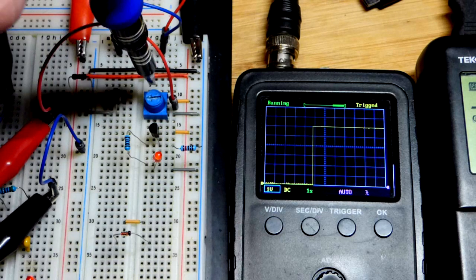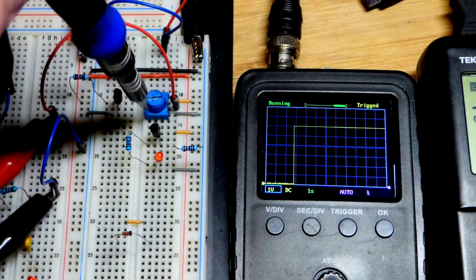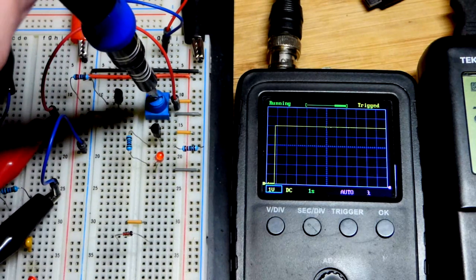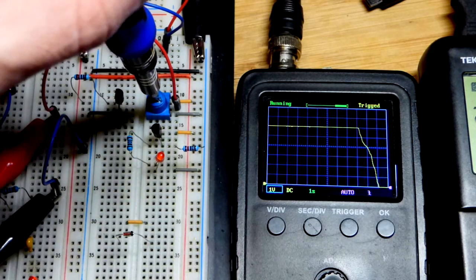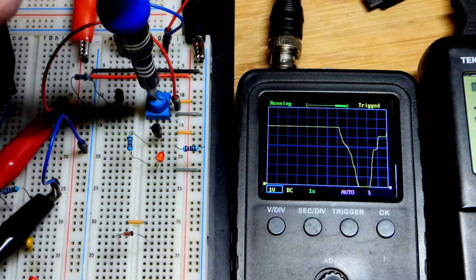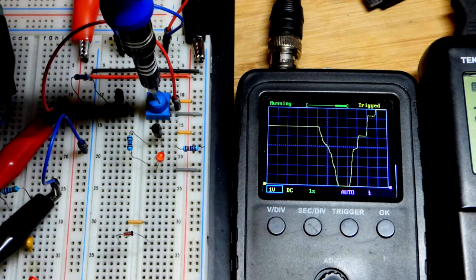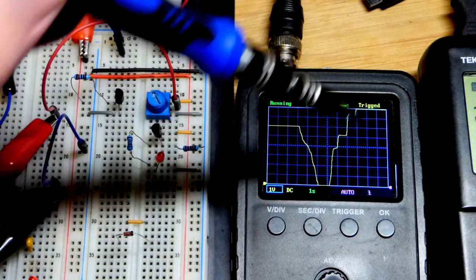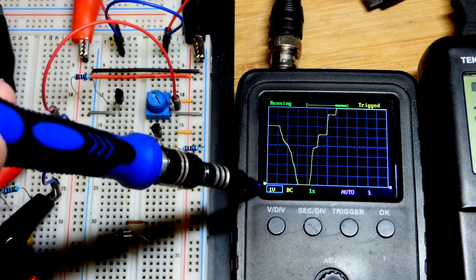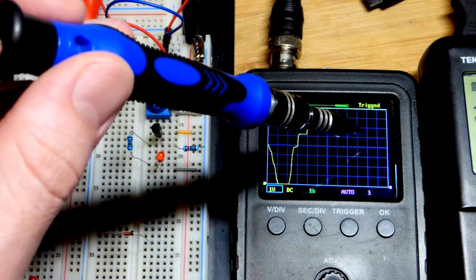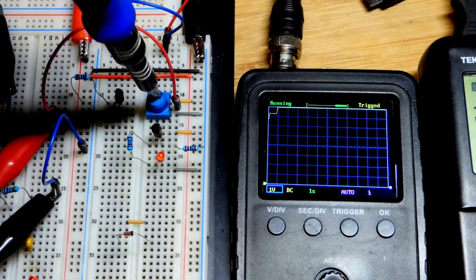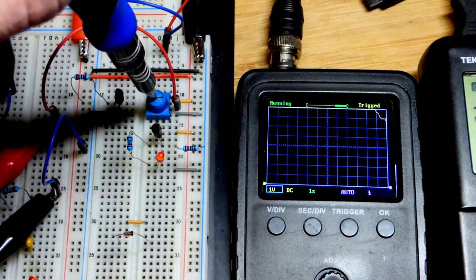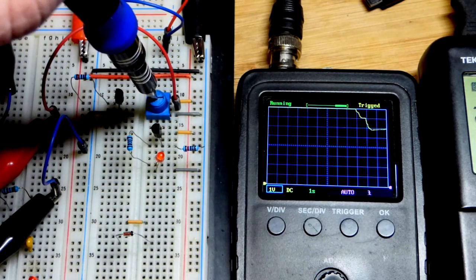We're going to go to the output of the trim pot. I have it set to six volts, it's about halfway as you can see, so 5000 ohms of resistance to the positive supply and 5000 ohms to the negative supply because it's a 10,000 ohm trim pot. We can go all the way down to zero volts or up to 12, but we're going to stay below eight and go to six volts for this video.